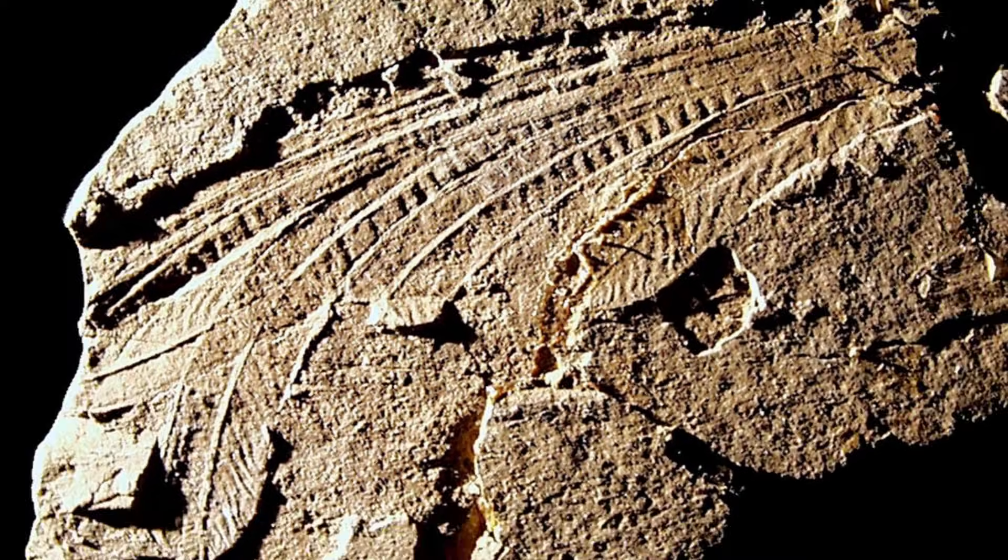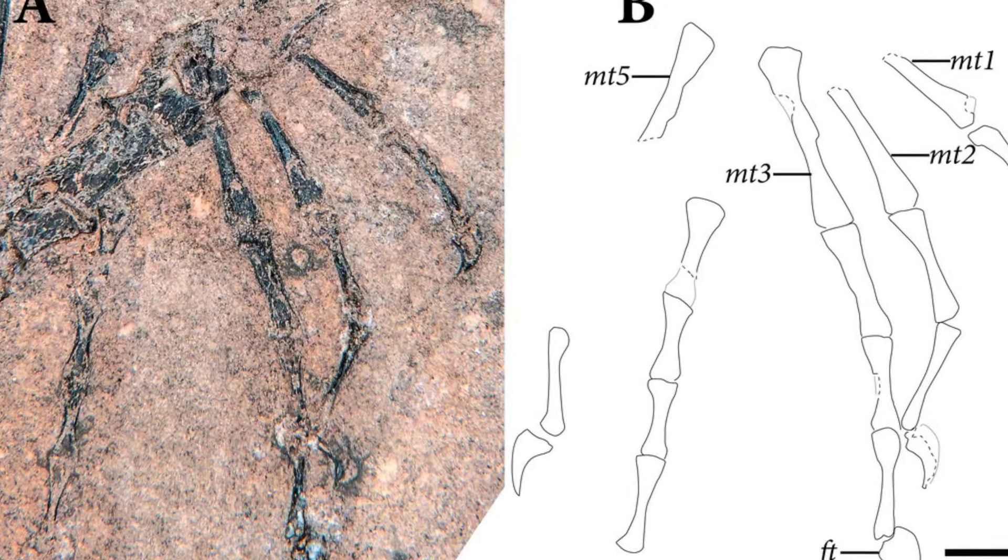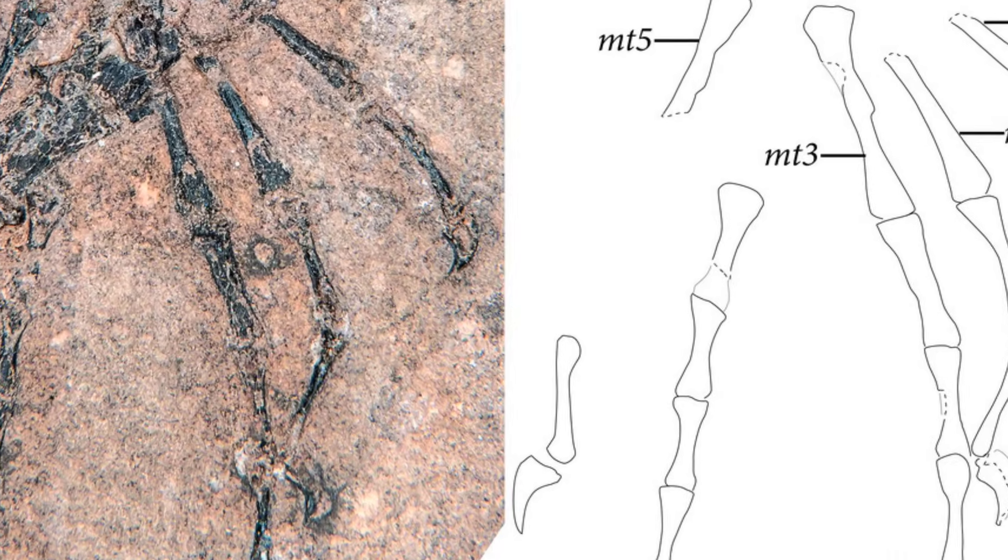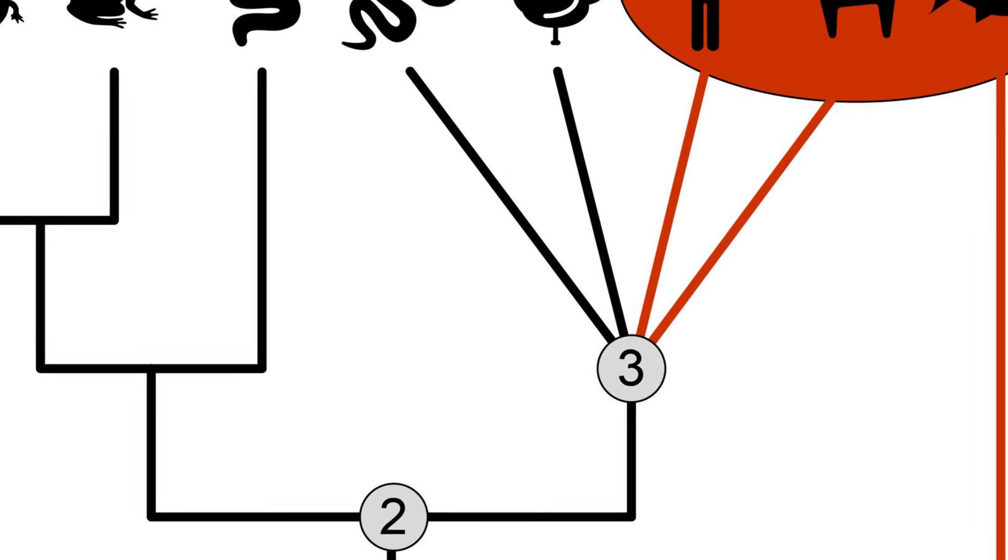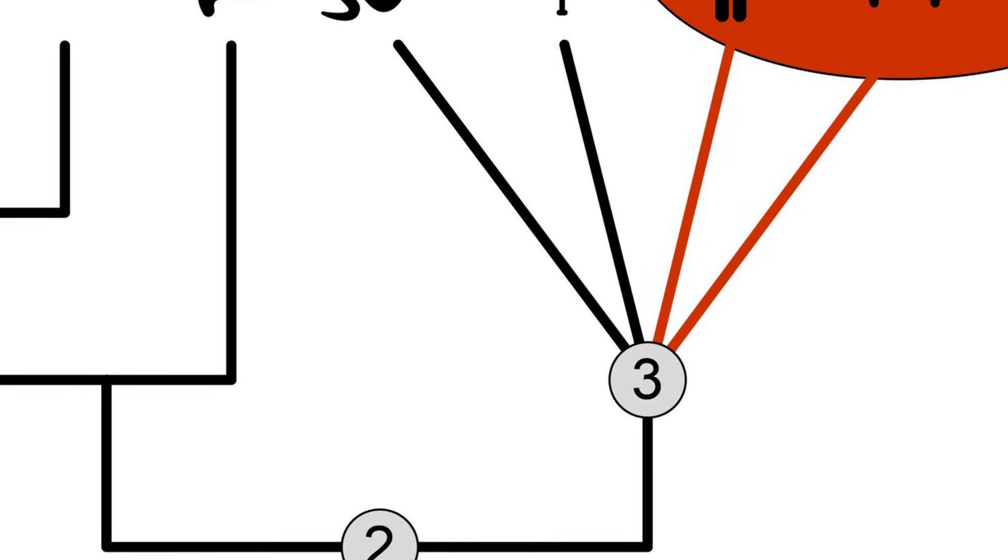Sharovipteryx broke that rule, and it paid the price. This is the story of nature's worst experiment, a creature so badly designed that only one fossil was ever found, because evolution looked at what it created and said, never again.